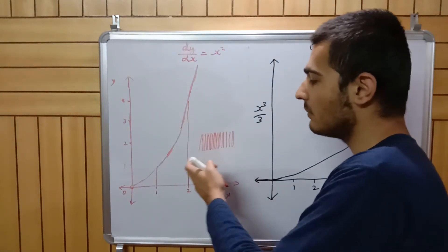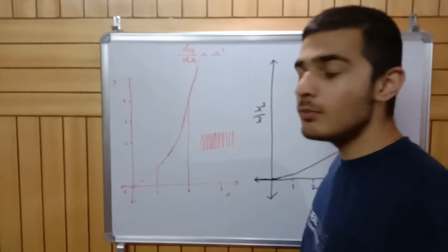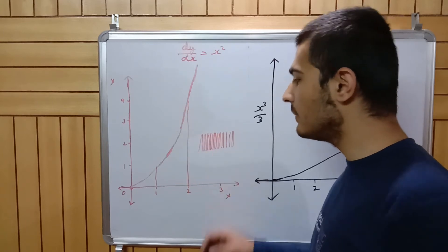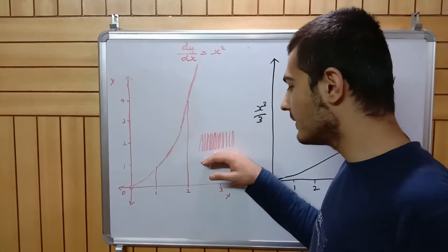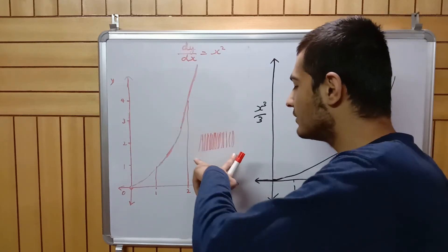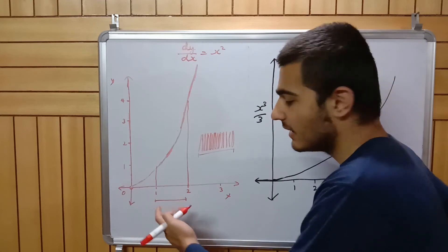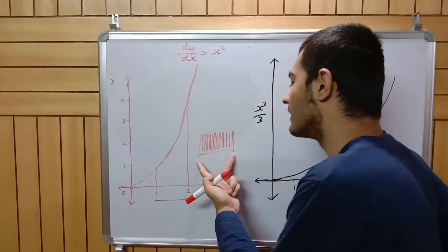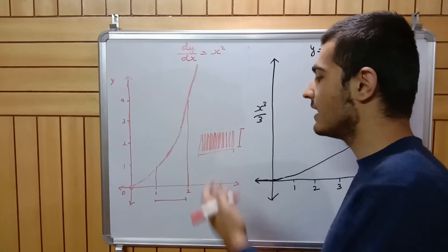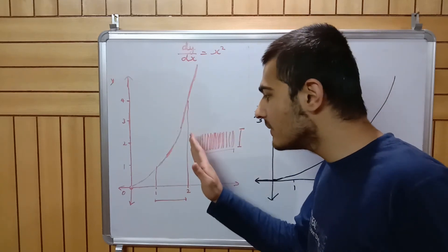We took those small rectangles — those strips — and rearranged them to form a single bigger rectangle. Because they're made up of the same amount of paper, their area is the same. The area of all those strips is approximately equal to the area of the whole shape. To find the area of this rectangle, we note the width hasn't changed: it's 2 minus 1, which is 1. All we need to find is the height.